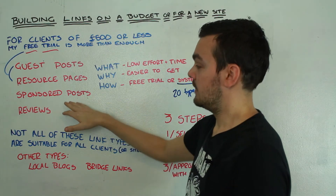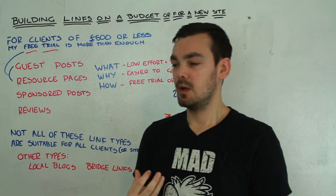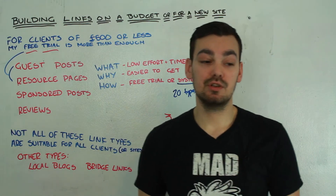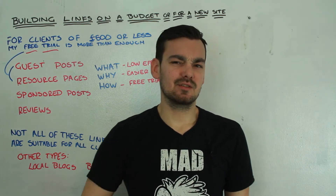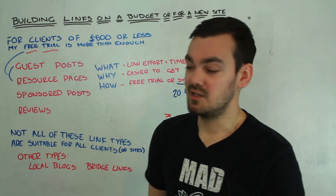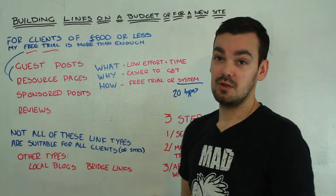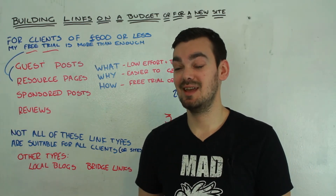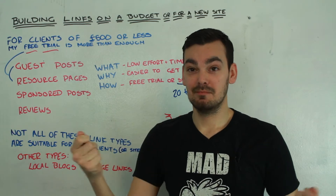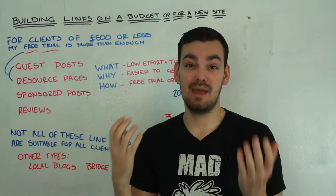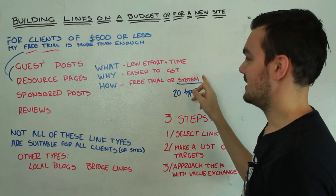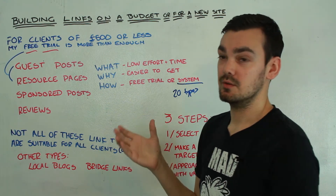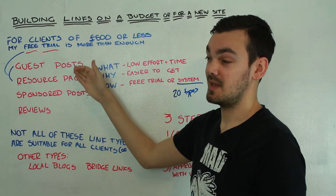The next one is sponsored posts — very similar to guest posts except you pay for them. Some sites with a really good or large audience will charge you because if their audience clicks through to your site and buys your stuff, it's going to make you money, so they want to charge for it. They're also really easy to get because the value proposition is very simple: you give someone money, they give you something in exchange. The process is in my paid system along with 20 other link types, though if you're clever you could work it out from the guest post process — except they ask you for money and you pay them.